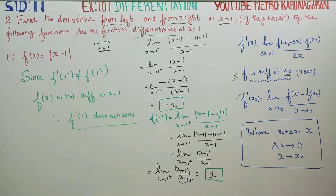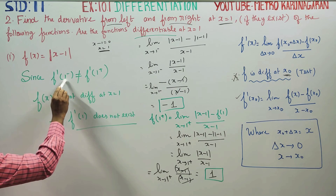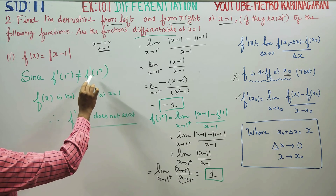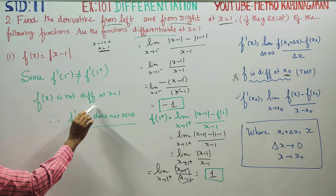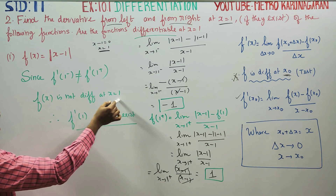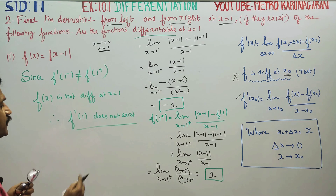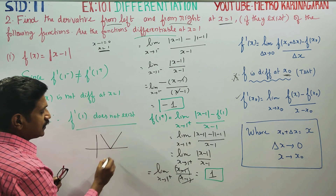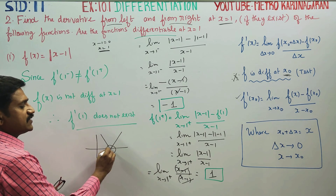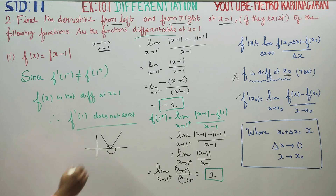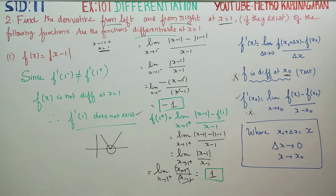The final conclusion: since the one-sided derivatives — the left-hand derivative f'(1⁻) = −1 and the right-hand derivative f'(1⁺) = +1 — are not equal, f(x) is not differentiable at x = 1, and f'(1) does not exist. As additional information, the modulus graph has sharp edges at this point, which confirms it is not differentiable there. This is a simple but very important sum. Thank you.